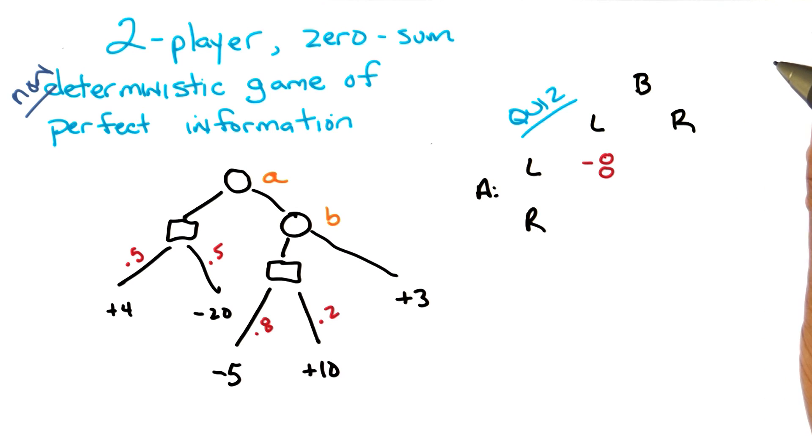Because half of 4 is 2, and half of negative 20 is negative 10, so negative 8. Right, so you just took the expectation of where you would end up. Beautiful. Exactly.